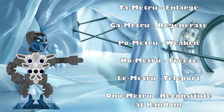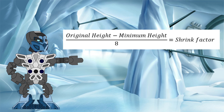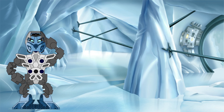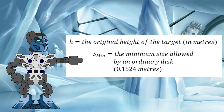Please note that we are ignoring the ninth power level of the great discs for now, both because the great discs were one-off special cases outside the normal rules, and because none of the six great discs had the shrink power. So if we take the original height of the object, minus the minimum height from it, and then divide that resulting figure by eight, we will know the factor by which each of the eight power levels will change the target. To represent the original height of our target, we will use a lowercase h. To represent the minimum size that our disc will shrink the target to, let's use the term s min.